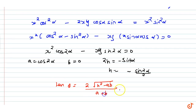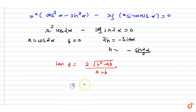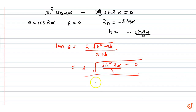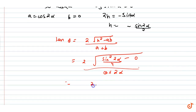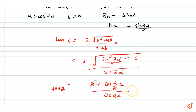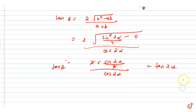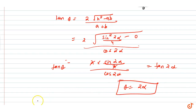Using the formula for the angle between pair of lines: tan theta equals 2 root of h squared minus ab, divided by a plus b. Substituting the values — h squared means sin squared 2 alpha divided by 4, and b value is 0, so a plus b is cos 2 alpha — we get tan theta equals 2 sin 2 alpha divided by 2 cos 2 alpha, and the 2s cancel. So tan theta equals tan 2 alpha, which means theta equals 2 alpha. That is the answer.